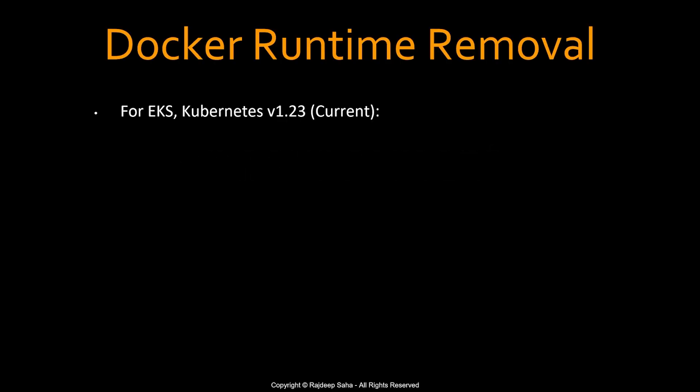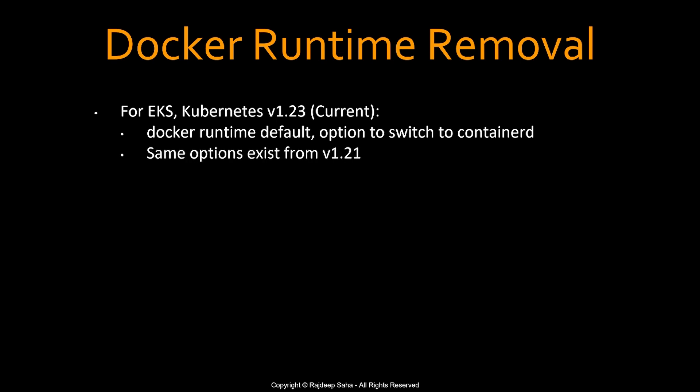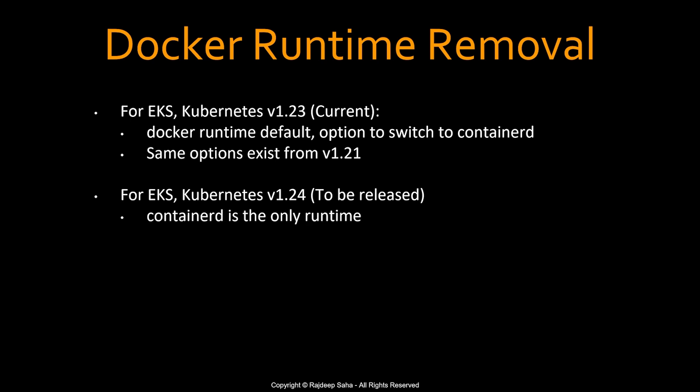Let's start with the announcement that just came out. Currently, for Amazon EKS or Elastic Kubernetes Service, the latest version is Kubernetes 1.23, where Docker runtime is the default runtime, and you have the option to switch to another runtime called Containerd. The same options exist from Kubernetes version 1.21. Now for Kubernetes version 1.24, which is to be released, Docker runtime is removed.